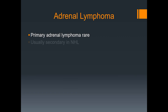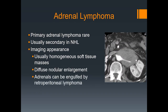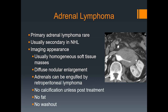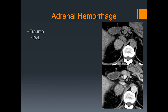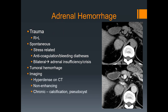Adrenal lymphoma: primary adrenal lymphoma is rare, usually secondary involvement in patients with non-Hodgkin's lymphoma. Usually we see a homogeneous soft tissue mass — an example shows a patient with lymphoma of the liver and bilateral adrenal masses with enlargement of the adrenal glands; it can also be engulfed by retroperitoneal lymphoma. There should be no calcification unless the patient's been treated, and no fat or washout. Adrenal hemorrhage can be traumatic (right more common than left), spontaneous, related to stress or anticoagulation. Bilateral adrenal hemorrhage can cause adrenal insufficiency or adrenal crisis — important to notify clinicians. Hemorrhage within a tumor is also possible; pure hemorrhage will be bright on CT, non-enhancing, and in the chronic phase can form a pseudocyst with peripheral calcifications.